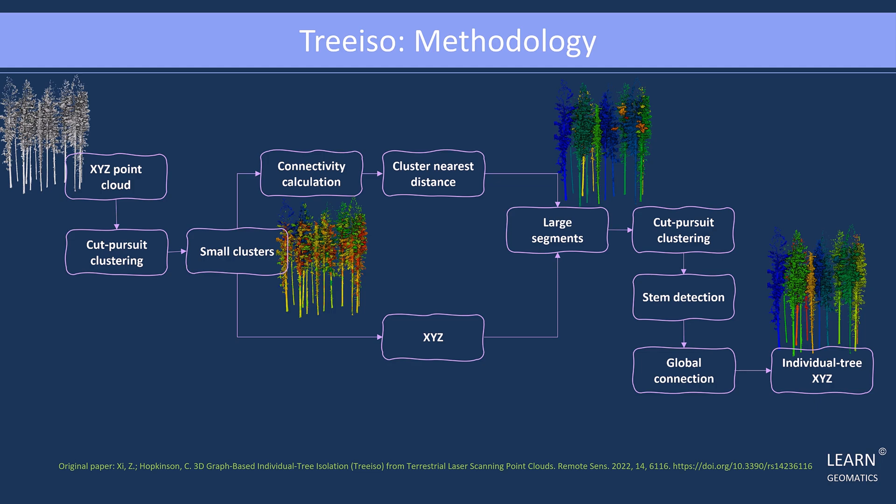In the first stage, the tree point clouds are isolated into small clusters in 3D. Each cluster's XYZ coordinates are utilized as input, while the inverse of the nearest distances determines the edge weights for the cut pursuit clustering algorithm. This initial segmentation yields meaningful patches of branches and crowns, setting the foundation for further clustering at the individual tree level.